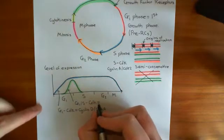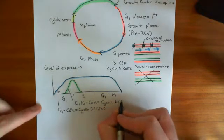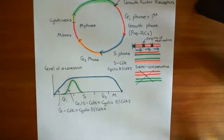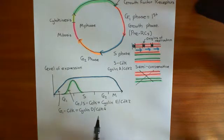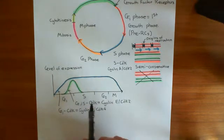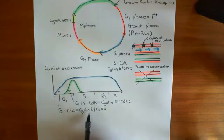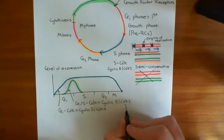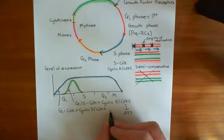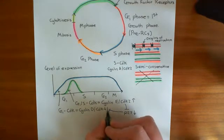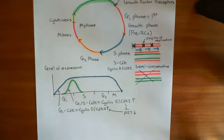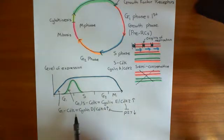This G1/S CDK is also called the cyclin E-CDK2 complex. Cyclin E-CDK2 phosphorylates and inactivates a protein known as P27, which inhibits cyclin D-CDK4 complexes by binding to CDK4 and inhibiting its interaction with cyclin D. So when cyclin E-CDK2 levels go up, P27 is inhibited, and cyclin D-CDK4 complexes can go up.